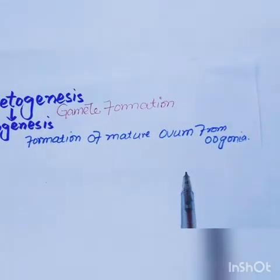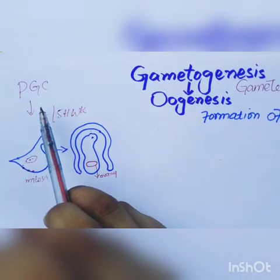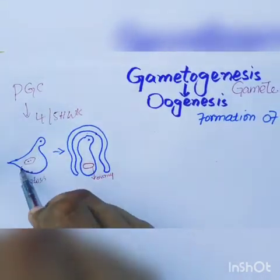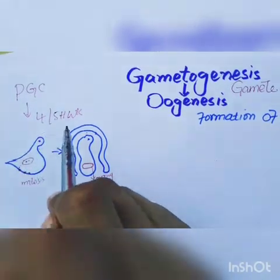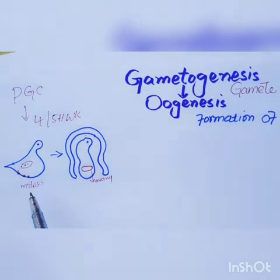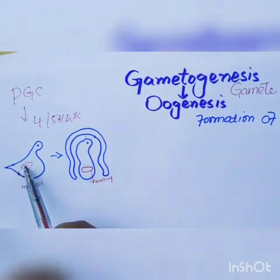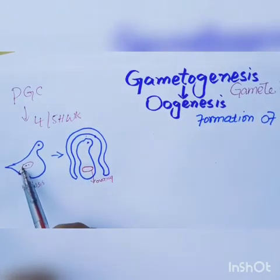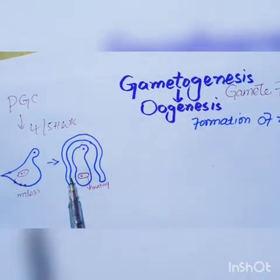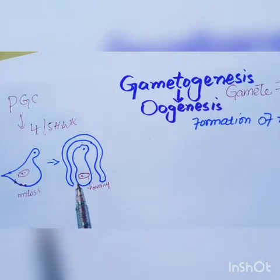The most primitive primordial germ cells will appear in the wall of the yolk sac around the fourth or fifth week, and then they will proliferate by the process of mitosis. Then they will migrate towards the gonads of the developing female — meaning towards the ovary.